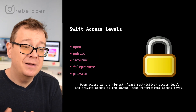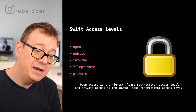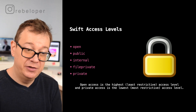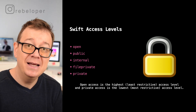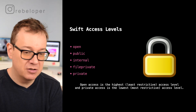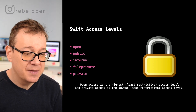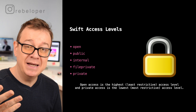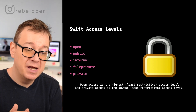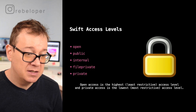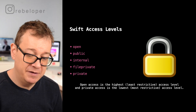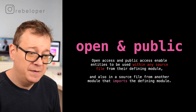So what are the Swift access levels? There are five: open, public, internal, file private, and private. Open access is the highest — the least restrictive access level — and private access is the lowest, meaning it is the most restrictive. It goes from open all the way down to private.